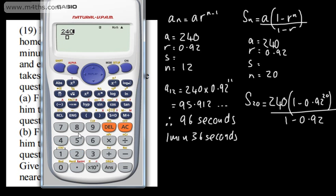So 240, this again is in seconds. So 1 minus 0.92, which we need to raise to the power of 20. And we're going to divide that by the 1 minus 0.92, which we can write as 0.08. So if you want to simplify that, you can do.